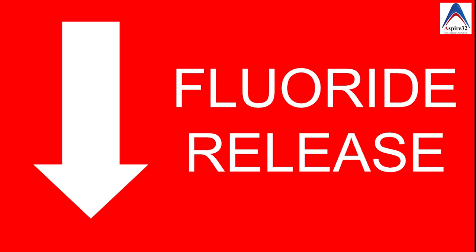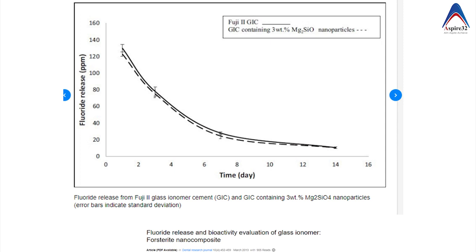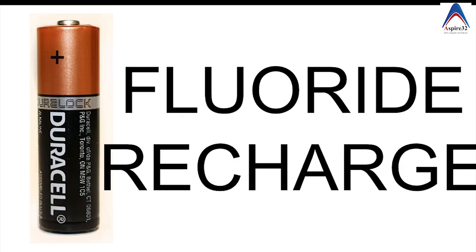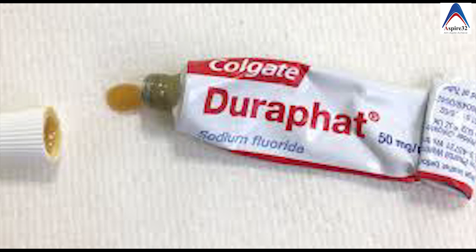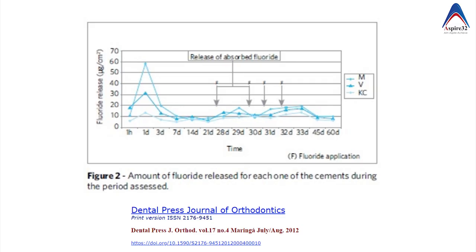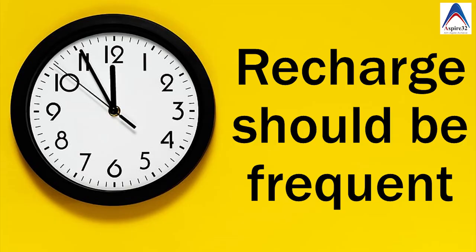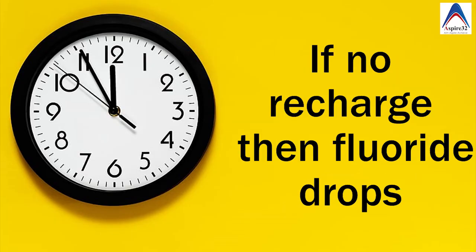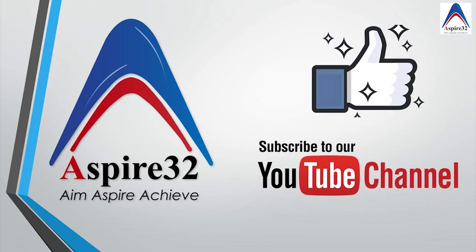Although fluoride is released from glass ionomer cement throughout the life of the restoration, the amount released is not uniform. The maximum amount of fluoride is released in the initial one month, and then the release gradually reduces. However, you can also do a fluoride recharge for glass ionomer cement — by application of fluoride varnish or by brushing daily with fluoride-containing toothpaste. The fluoride will be absorbed by the glass ionomer cement and the amount released will increase for a few days, but only if the recharge is frequent.